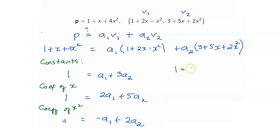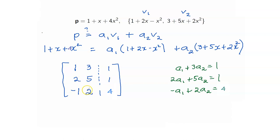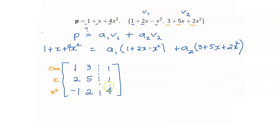We form the augmented matrix: the first column is 1, 2, negative 1 (the coefficients of V1), the second column is 3, 5, 2 (the coefficients of V2), and the right-hand side is 1, 1, 1. Notice the columns correspond exactly to the polynomial coefficients. Applying R3 plus R1 gives 0, 5, 5 for the new R3. Applying R2 minus 2R1 gives 0, negative 1, negative 1 for the new R2.